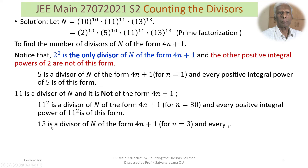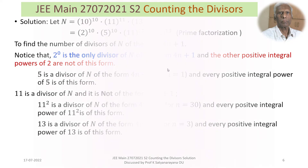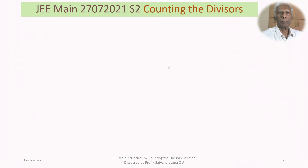13 is a divisor of N and it is of the form 4N+1 — for N=3, 4N+1 = 13. Every positive integral power of 13 is of this form. Having noted these results, we continue in the next slide.